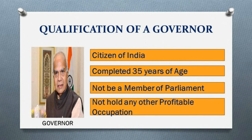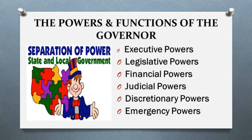Qualifications of a governor: he should be a citizen of India and must have completed 35 years of age. He should not be a member of parliament or any state legislature. If he is a member of any legislature, he automatically vacates his seat on assuming office. He should not hold any other profitable occupation.